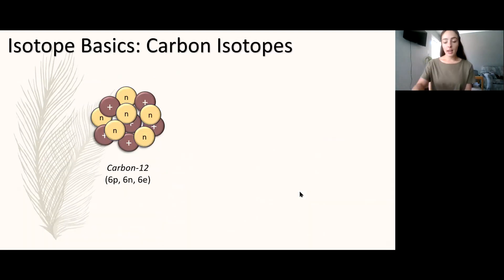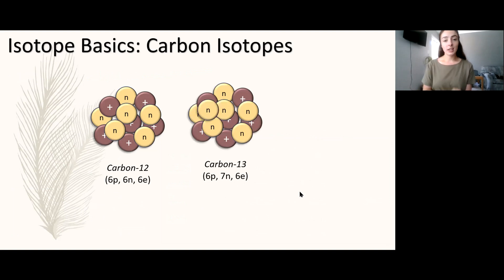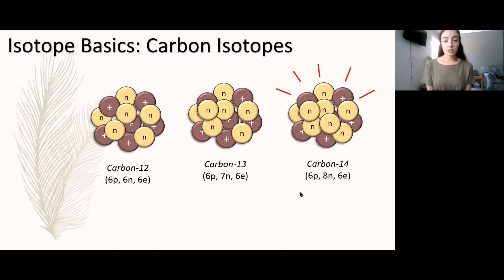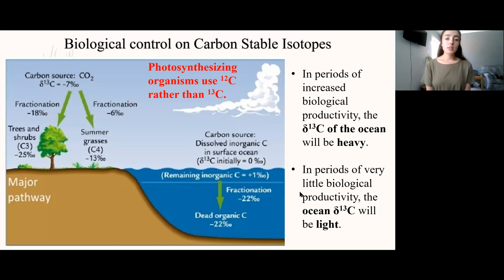Carbon also has another isotope, carbon-14. Carbon-14 is radioactive and has two extra neutrons - eight neutrons in total - and is unstable. Therefore it undergoes radioactive decay, and for that reason we cannot use it in stable isotope ratios because its concentration isn't constant. It decays into nitrogen-14, so we can use it for dating - if you want to know more you can watch the absolute dating video - but we can't use it in the same way as the 13-to-12 ratio.